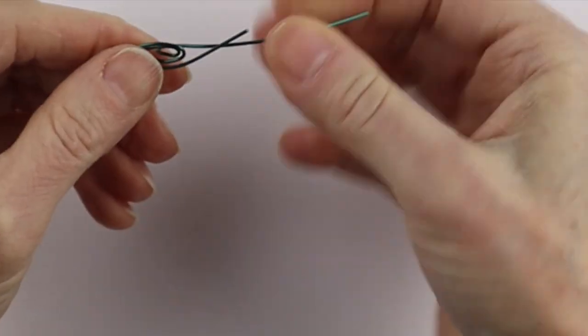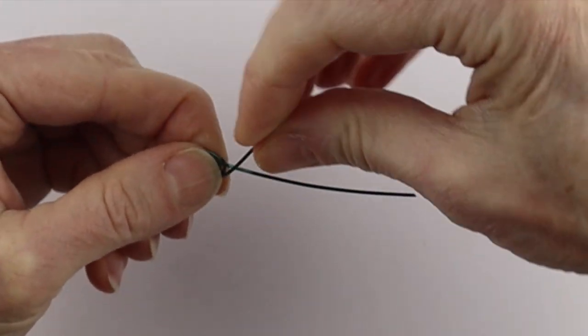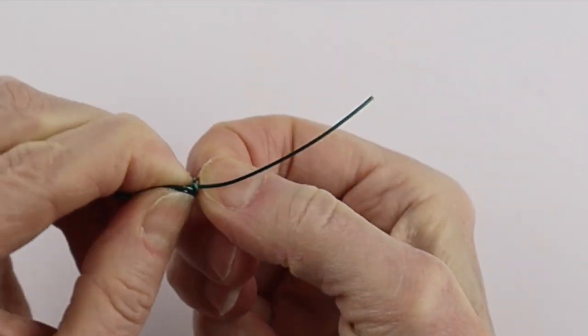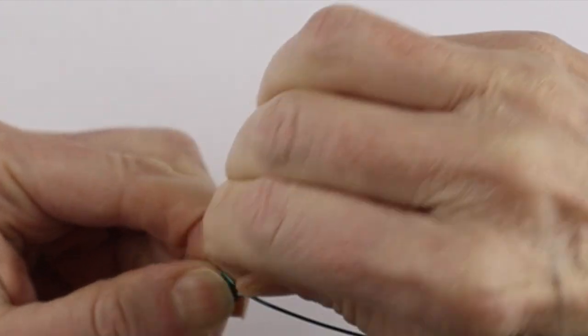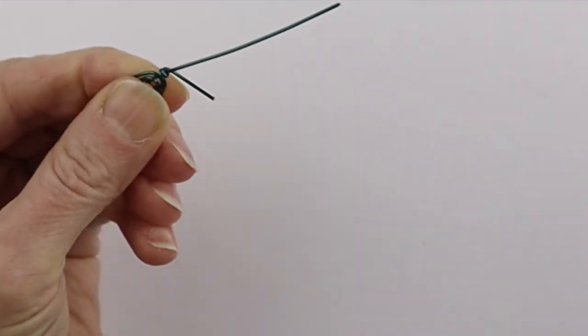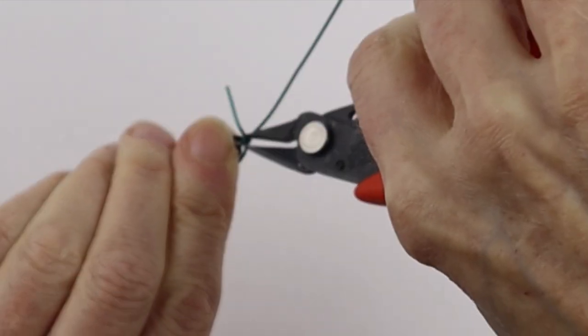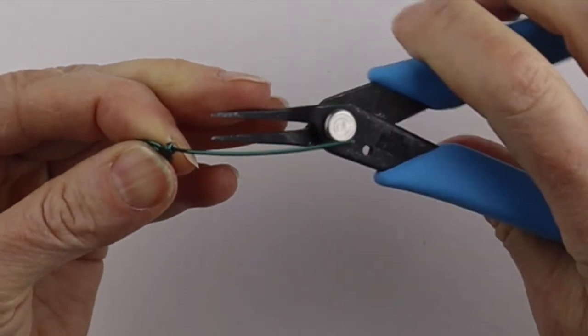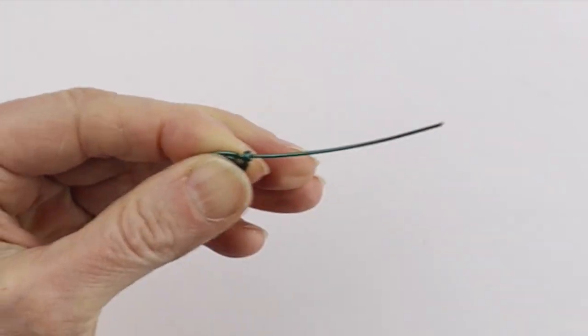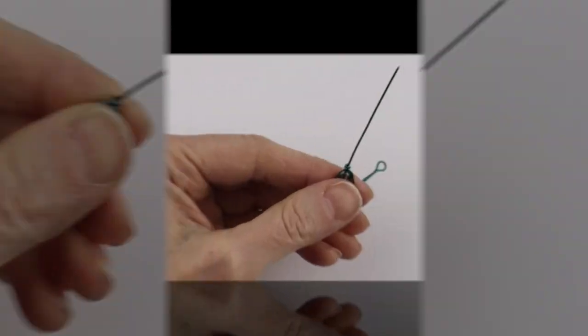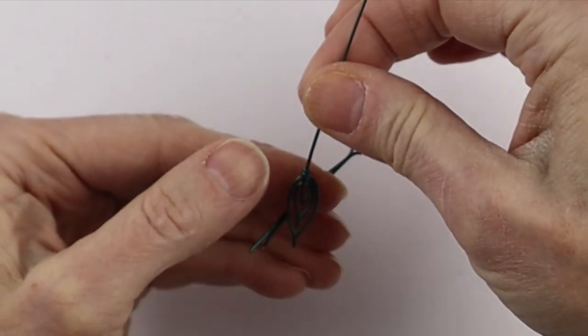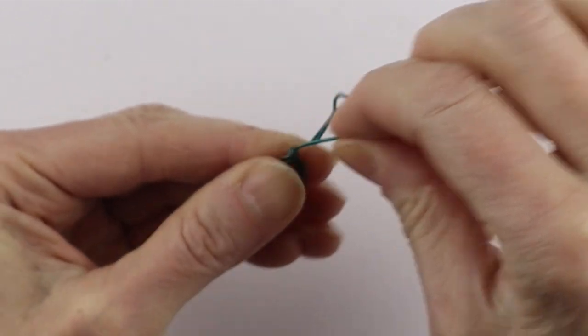We're going to twist this end around to finish it off. Bring this around the top and bend it around a couple of times. Clip it and pinch it in a little more.